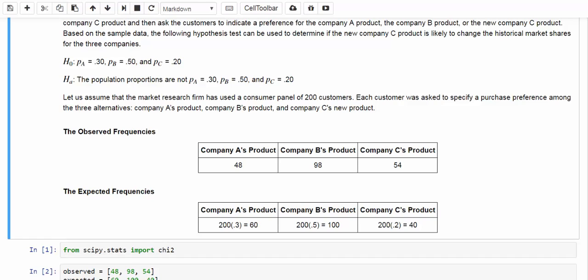Let's assume that the market research firm has used their consumer panel of 200 customers. Each customer was asked to specify a purchase preference among the three alternatives: Company A's product, Company B's product, and Company C's new product. And this table summarizes the observed frequencies. Out of the 200 customers, 48 prefer A's product, 98 prefer B's product, and 54 prefer Company C's new product.